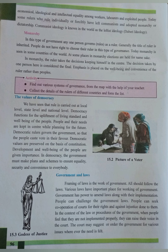In monarchy, any one person governs or rules as a ruler. Generally, the title of ruler is inherited. People do not have the right to choose their ruler in this type of governance. Today, monarchy is seen in some countries of the world. At some places in monarchy, elections are held for namesake. The ruler takes decisions keeping himself at the center, and the decision taken by one person is considered final. Emphasis is placed on the well-being and convenience of the ruler rather than the people's.